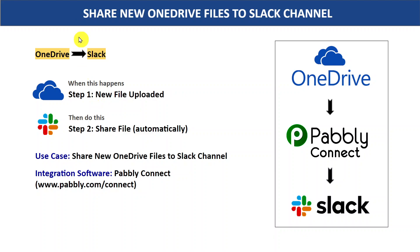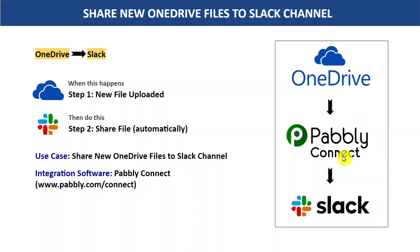In this video we are going to learn how you can share new OneDrive files to a Slack channel automatically. OneDrive and Slack are two different applications and there is no direct connection between them. That's why we are going to integrate both with the help of an integration software called Pabbly Connect, so that whenever a new file is uploaded in OneDrive, Pabbly Connect will automatically share that file to a Slack channel at the same time.